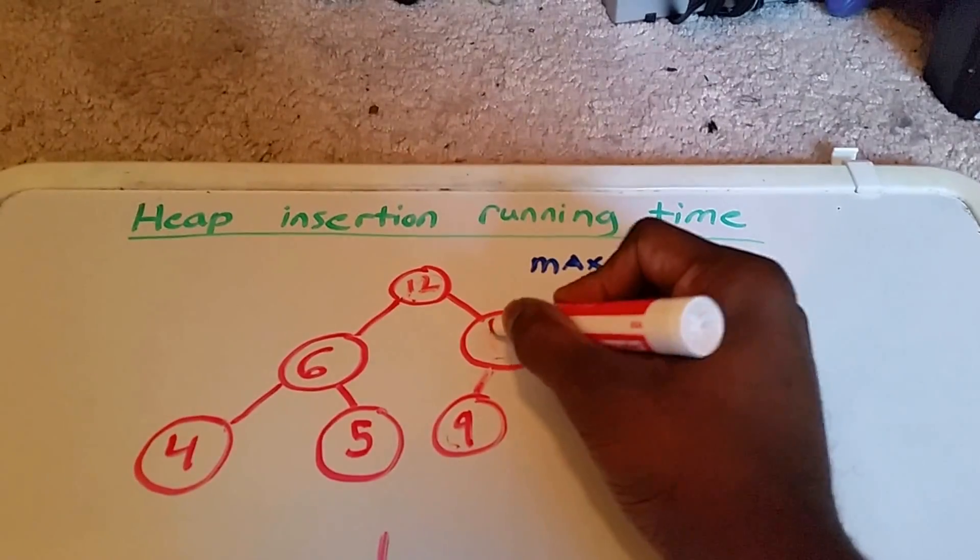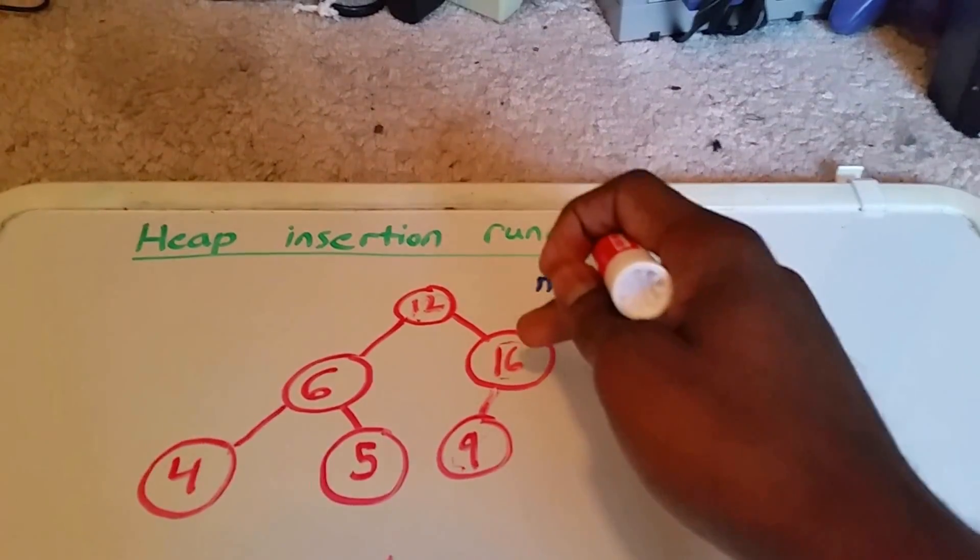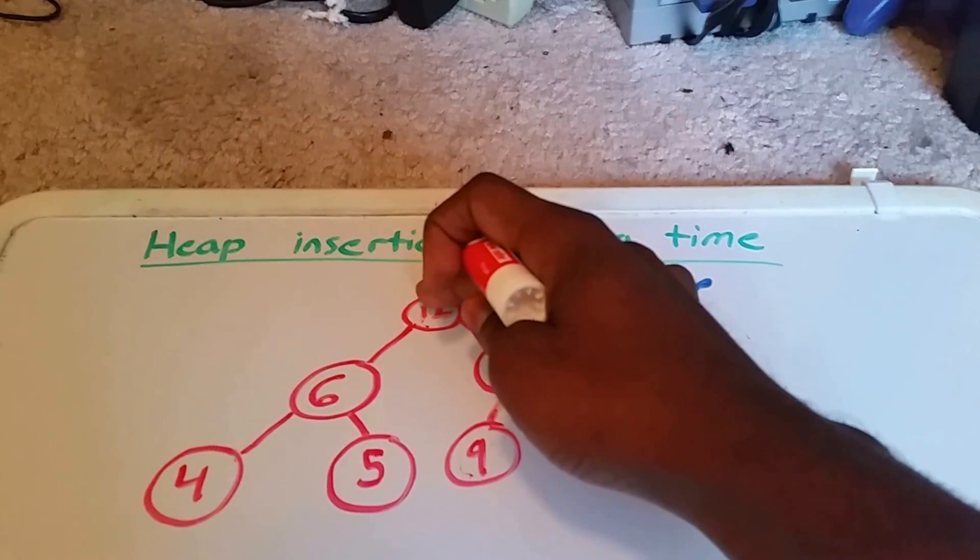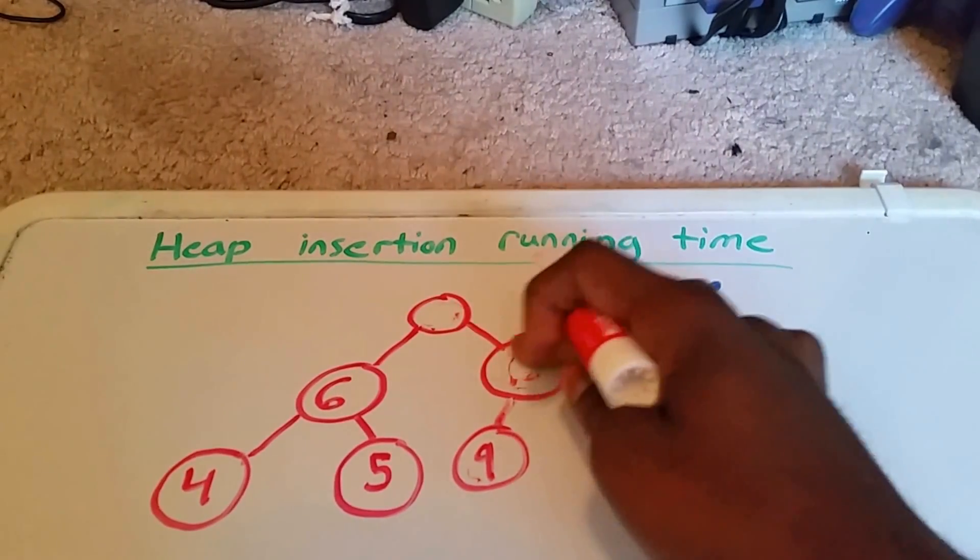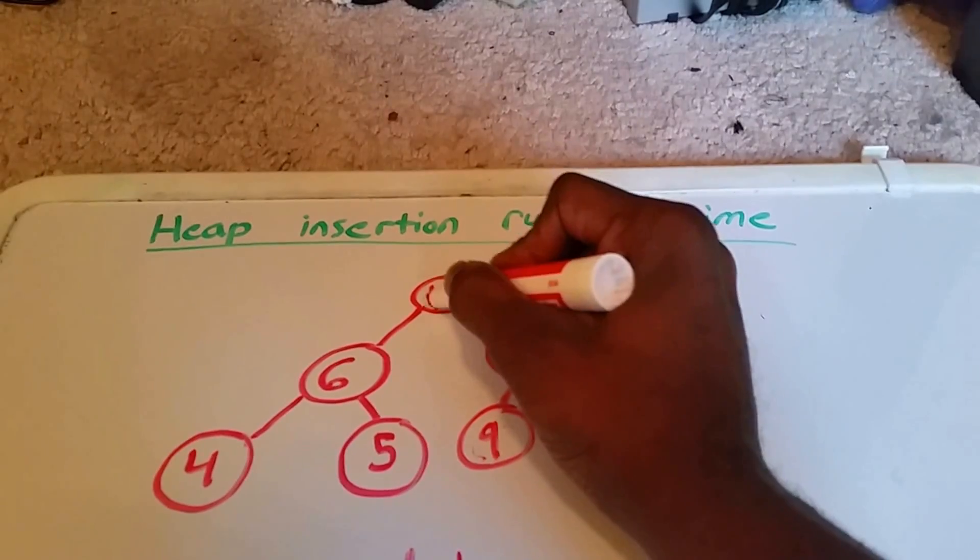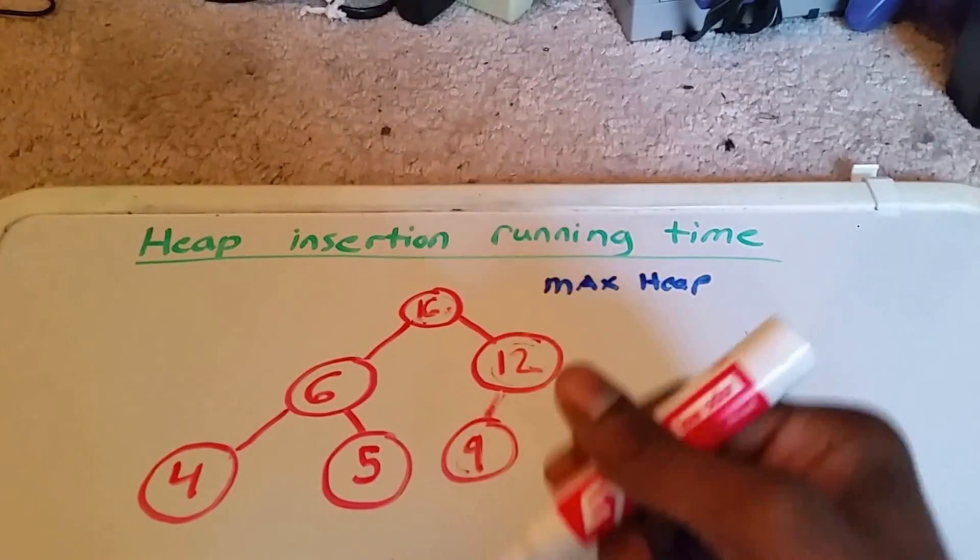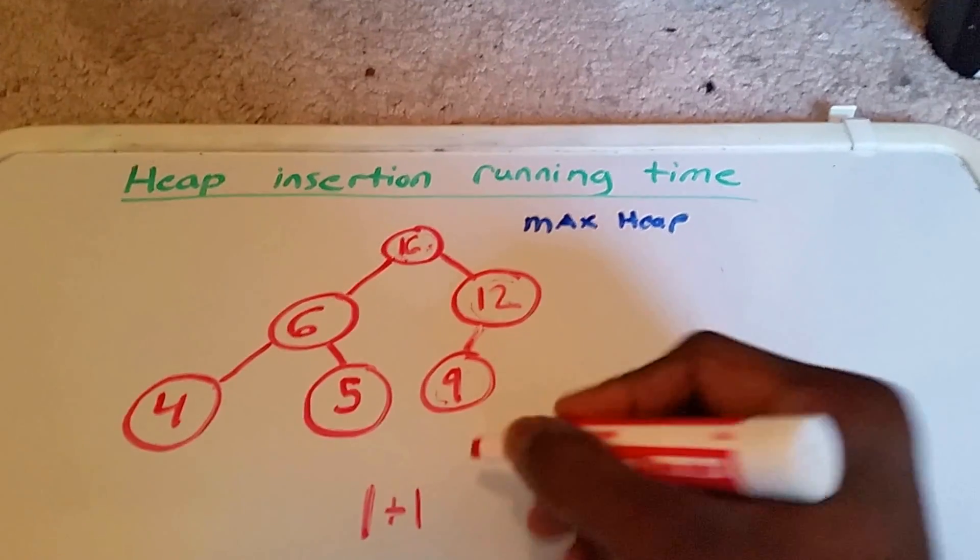We swap the 9 with 16. And then we have to check 16 with 12. And 16 is greater than 12. So we have to swap those two as well. So that's the second time, plus 1 that we swap these two elements. I mean swap the element 16.